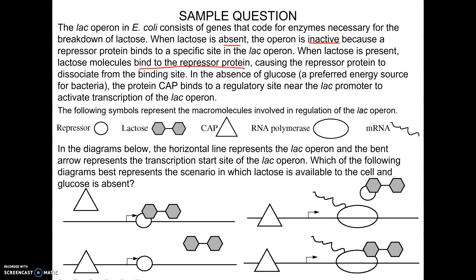They give you some symbols and ask which diagram best represents the scenario in which lactose is available and glucose is absent. When glucose is absent, CAP must bind to the regulatory site — so any diagram without CAP bound can be eliminated. Then, when lactose is present, it binds to the repressor and causes the repressor to dissociate from the binding site — so we need lactose bound to the repressor, not to polymerase.